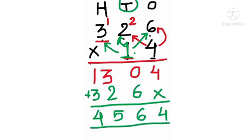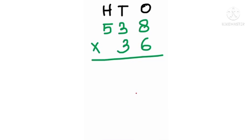4564 is our product. For another example, we have to multiply 538 by 36. We always start the multiplication from the 1s place, so we multiply 6 with 8, 3, and 5.